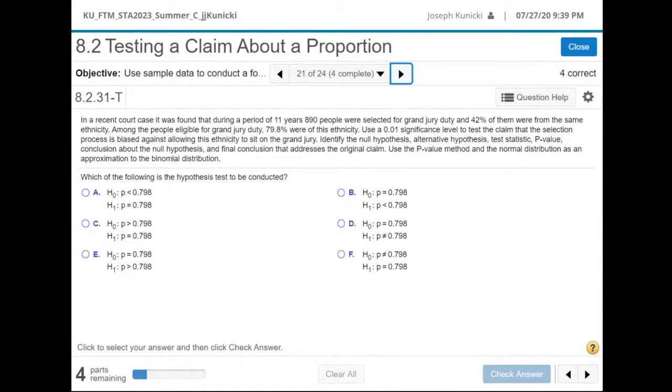Okay, in a recent court case over 11 years, 890 people were selected, so that's n equals 890. 42% were from the same ethnicity, so that's p-hat. Among the people eligible for jury duty, 79% were of this. So p, 79.8, maybe that's p-hat, let's read some more. So alpha's 0.01. The claim is that the selection process is biased against allowing this ethnicity to sit in a grand jury.